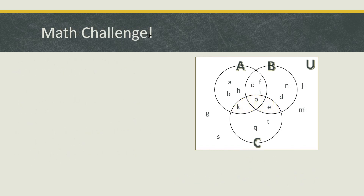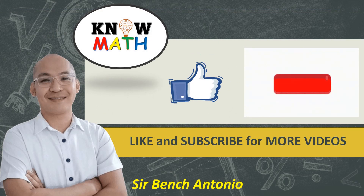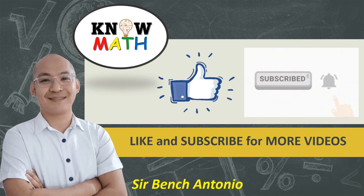And those are the topics for Venn Diagrams. I have a math challenge for you: given the Venn Diagram on the side, determine the elements of (A union C) intersect B, and its complement. If you know the answer, just comment down below and I'll be happy to assist you. Thank you so much for watching, and if you are not yet subscribed on my channel, please do not forget to hit like and subscribe. Thank you.